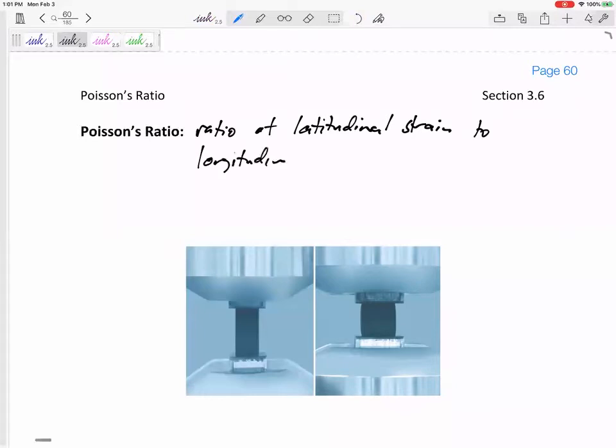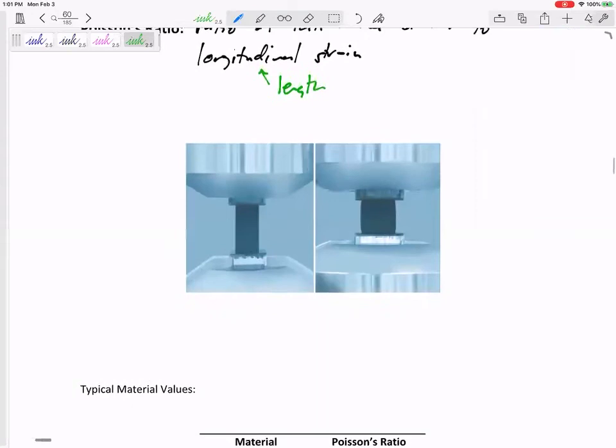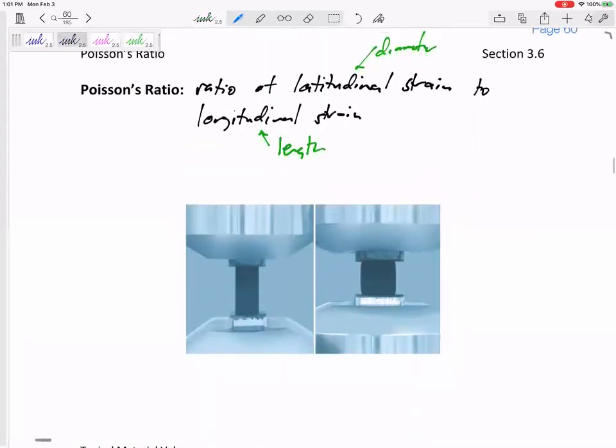The longitudinal is the axial direction, the long way. Latitudinal is going to be the diameter. So this is like diameter strain; this is like length strain. Let's write a good definition. This Poisson's ratio, this nu, is equal to negative...